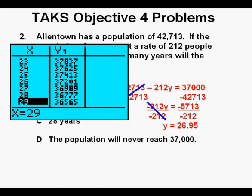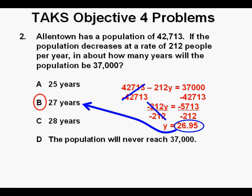And from here, we can scroll down until we get to our answer choices. And we again see that 27 years gets us closest to the population of 37,000, again reaffirming B as our correct answer.